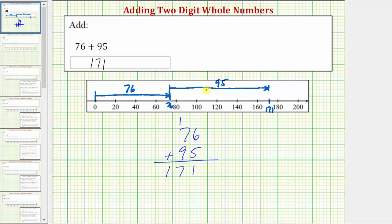Seventy-six plus ninety-five equals one hundred seventy-one. I hope you found this helpful.